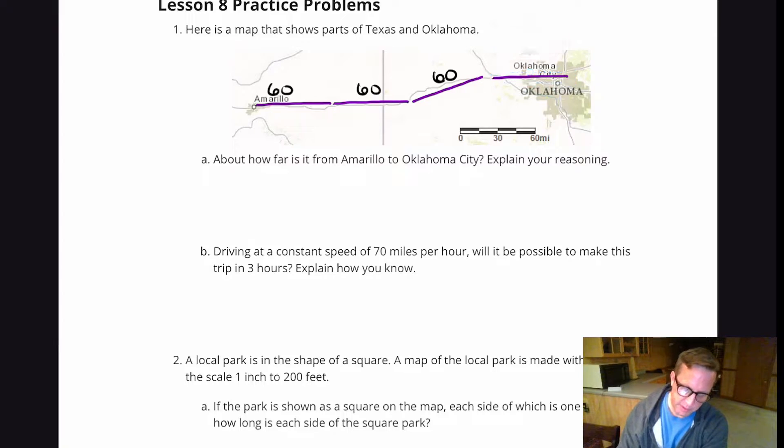So right there, once we get into Oklahoma, that's like about 30 miles. So you got 60, 60, 60, that's 180 plus 30, that's 210 miles.